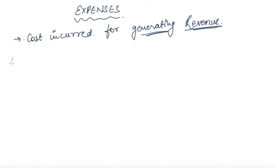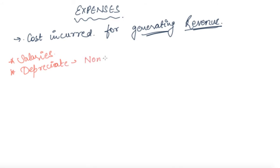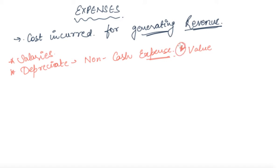Taking some examples of expenses: salaries paid to the staff — your staff members will help you to generate revenue in future, and for that you are paying salaries. Next is depreciation. Depreciation is basically a cost but a non-cash expense, in which you will not see cash flowing in or out, but still the expense is made as the value of your asset will be decreased because of charging of depreciation.